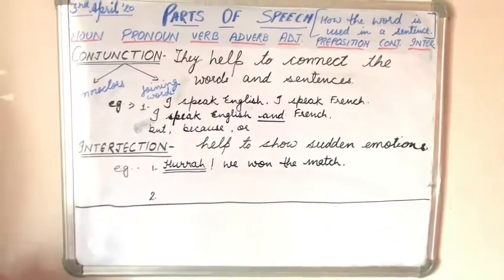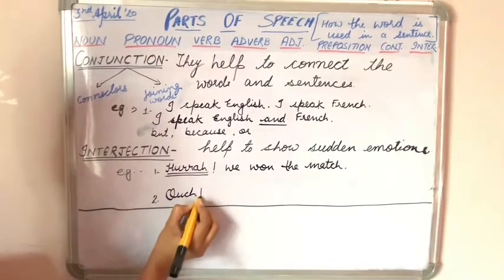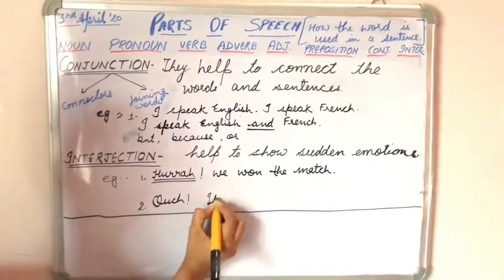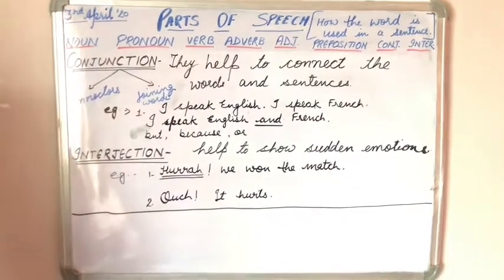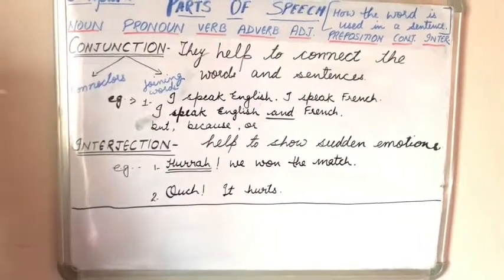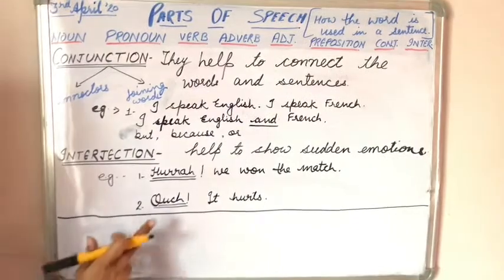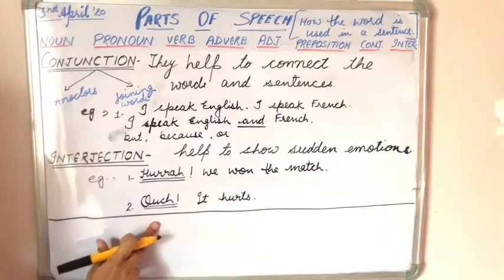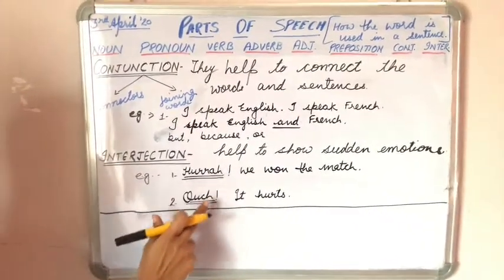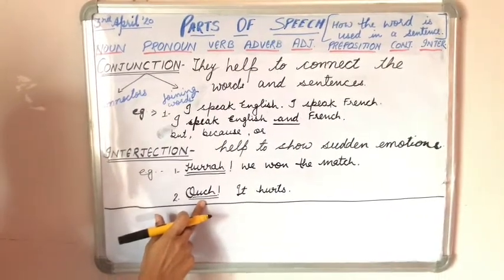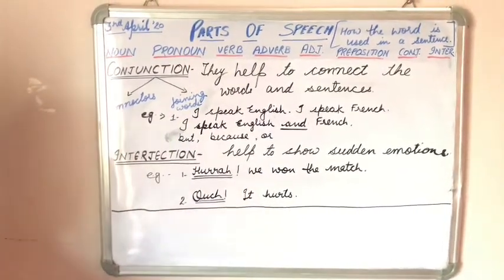Now, like this we have another example: 'Ouch! It hurts.' Here, you can see the word 'ouch' — it is the interjection in this sentence. It shows the emotion of pain. So, the word 'hurray' is showing happiness or joy, and the word 'ouch' is showing the emotion of pain. We use such interjections to show our emotions.